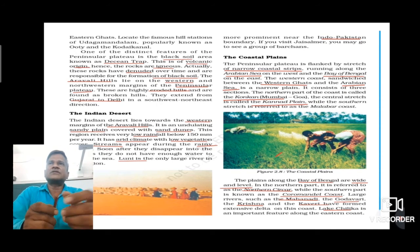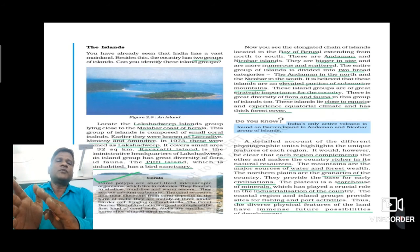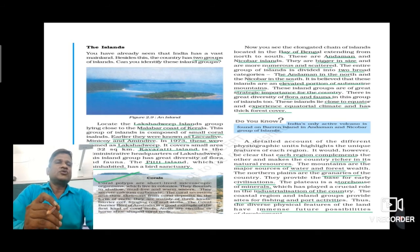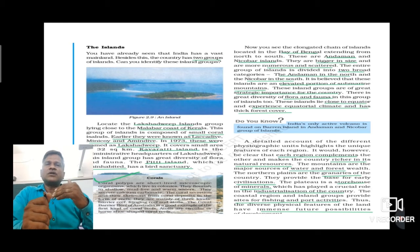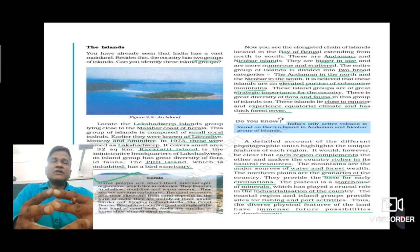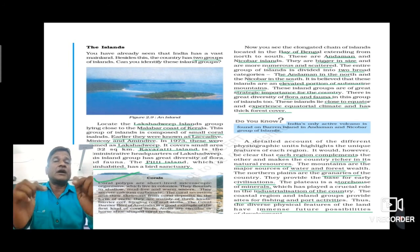Now we are going to discuss the last physiographic division of India — the group of islands. India has two groups of islands in both directions. In the eastward direction, this group of islands is called the Andaman and Nicobar Islands — the northern part is called Andaman and the southern part is called Nicobar. The capital of this group of islands is Port Blair. In Port Blair, we have the very famous and historical Cellular Jail, which has historical importance. This group of islands has great strategic importance for our nation.